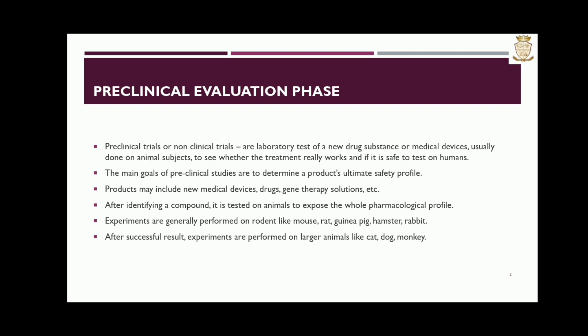After identifying a compound, it is tested on animals to expose the whole pharmacological profile. Experiments are generally performed on rodents like mouse, rat, guinea pig, hamster, and rabbit.